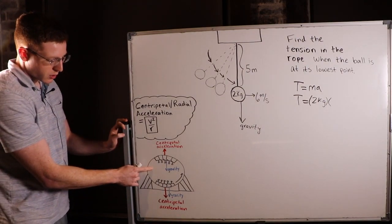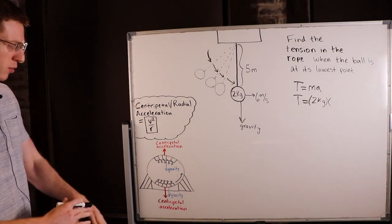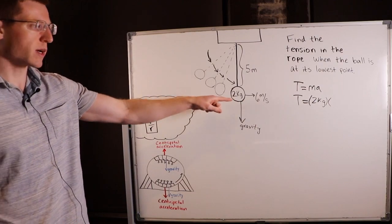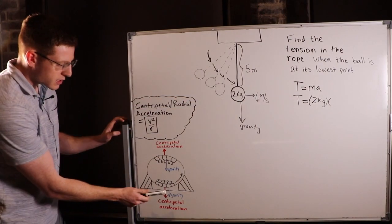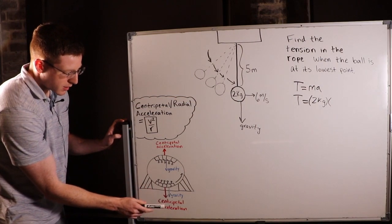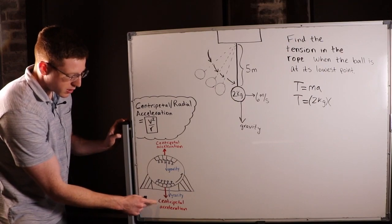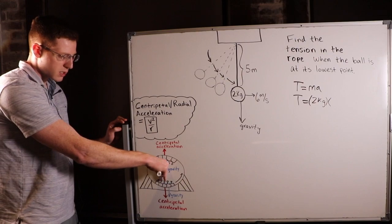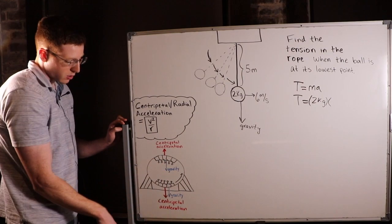The example I like to use is a roller coaster. So when you get to the bottom of a roller coaster loop, you feel very heavy in your seat, just like on that swing set. And that's because not only is gravity pulling you down, but something called centripetal acceleration is also pulling you straight down because centripetal acceleration always acts directly out of a circle.